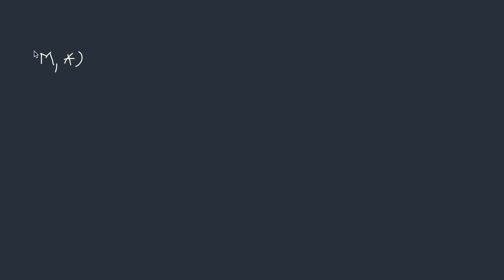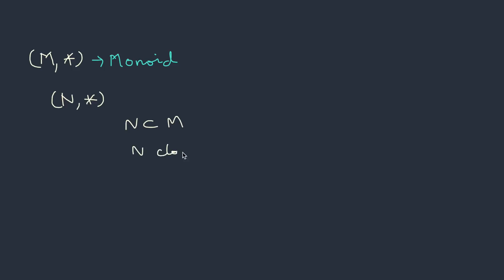On similar lines, we can define a sub-monoid. If we have a monoid defined on operation star, and there is another structure N on the same operation such that N is a subset of the monoid, N is closed under the operation, and the identity element of the monoid also belongs to N, then N is called a sub-monoid.